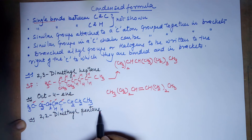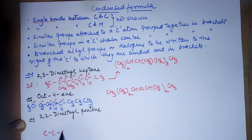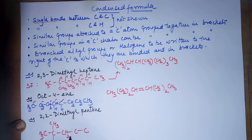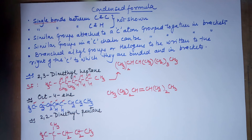Coming to the third example: 2,2-dimethylpentane. '-ane' means single bond, five carbons because it's a pentane — one, two, three, four, and five. '2,2-dimethyl' means you have a methyl here and a methyl here at carbon two. Satisfying the hydrogens: CH3; the central carbon has no hydrogens because all four bonds are done; the next carbon has two hydrogens, then one bond so three hydrogens.